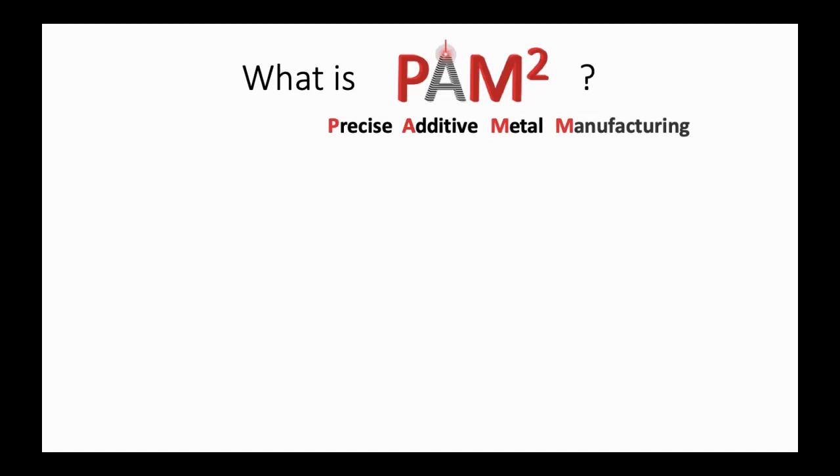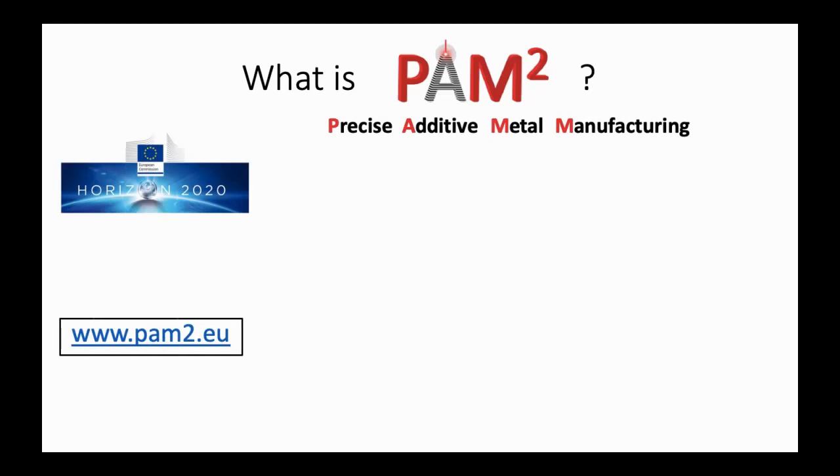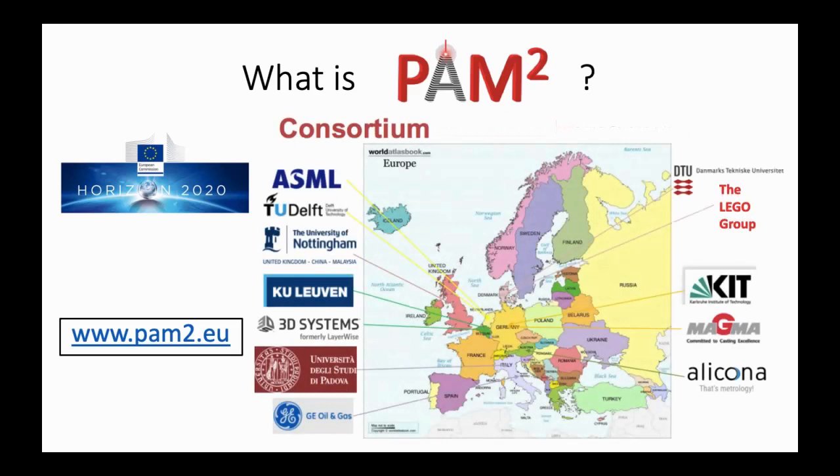This is a Marie Curie innovative project founded by the European Union under the Horizon 2020 program, in which industries and academia work together to improve the performances of the SLM process by focusing on robustness, predictability, metrology and developing computer-aided engineering methods to empower the AM design.